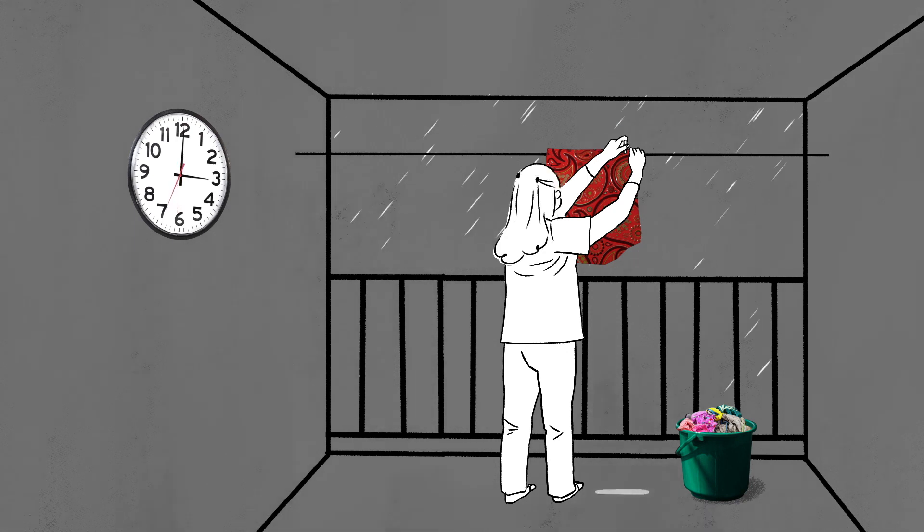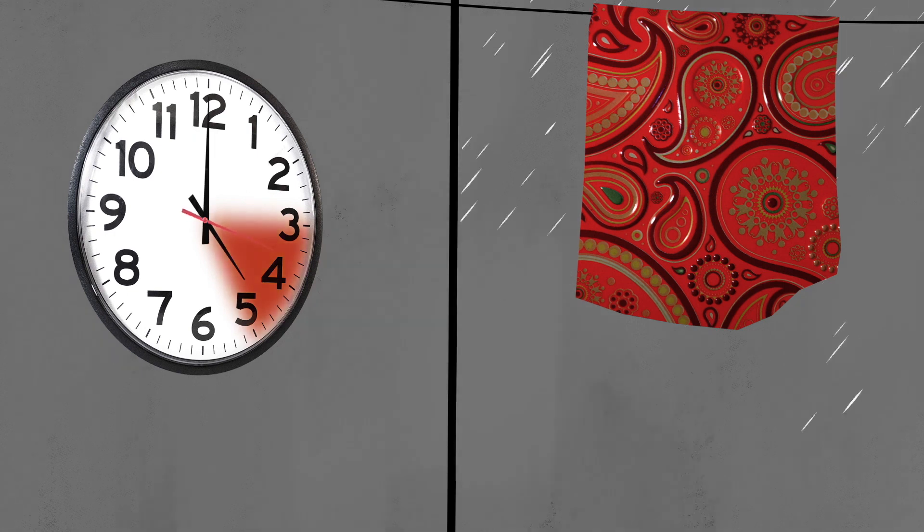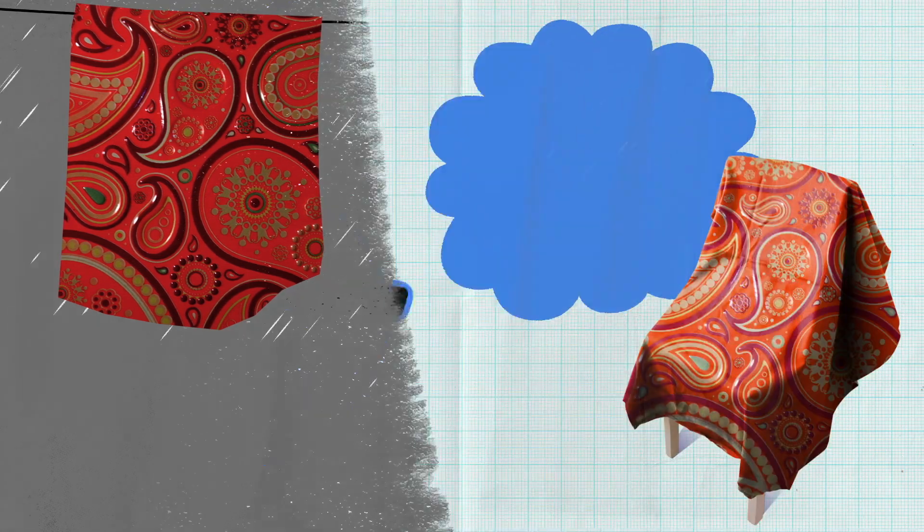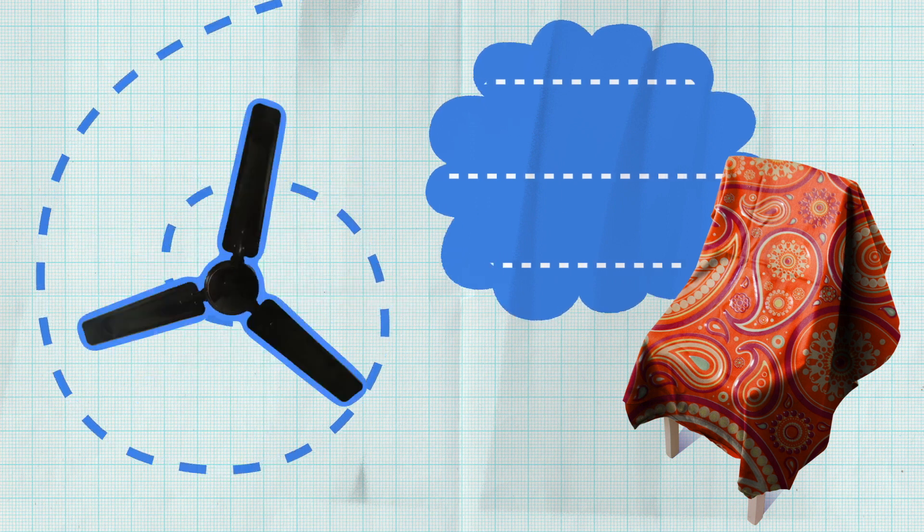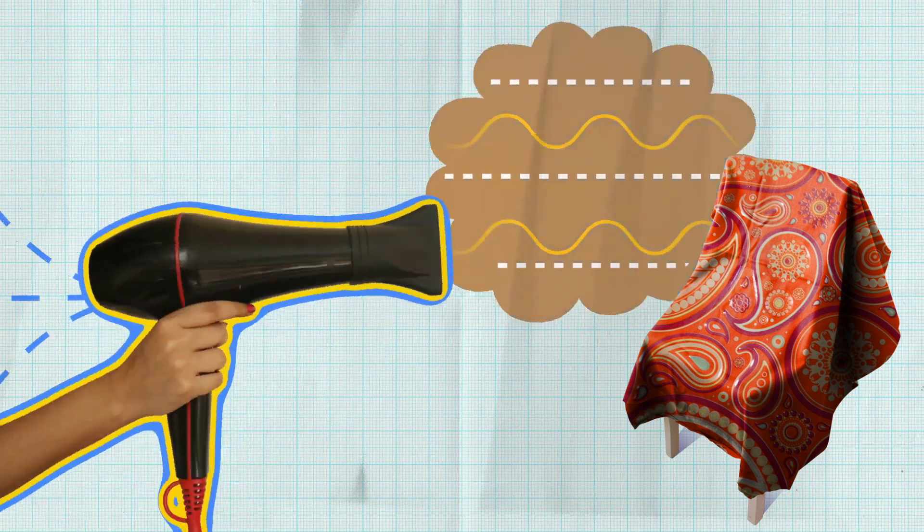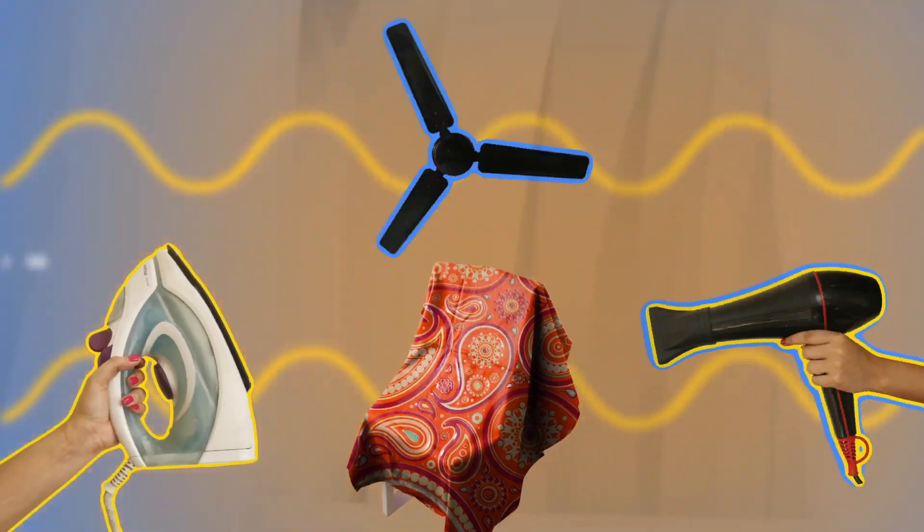Do you keep the dress under the fan at maximum speed? Do you use a hairdryer to dry it, or do you use an iron? All of these solutions involve the knowledge of science concepts like heat, evaporation, and energy conversion.